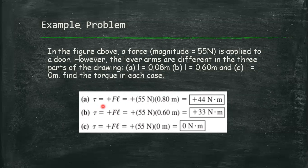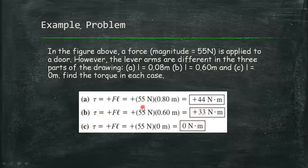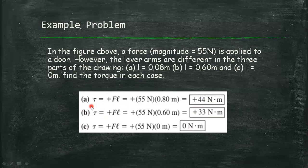The solution for letter A is this: we multiply 55 newton with 0.8 meter, so we have 44 newton meter. And for B, multiplying the length of the lever arm, which is 0.6 with 55 newton, we have 33 newton meter. And finally, for letter C, multiplying 0 with the magnitude of the force, we have 0 newton meter.